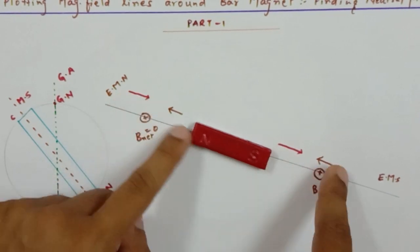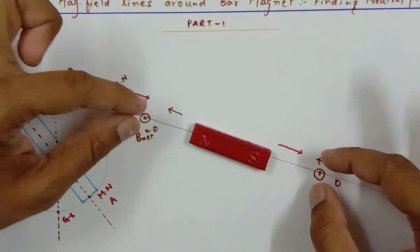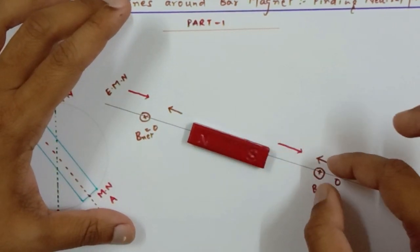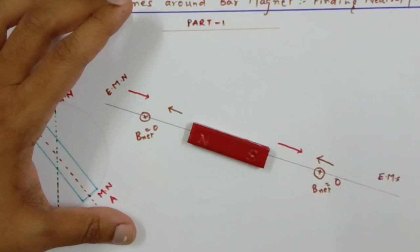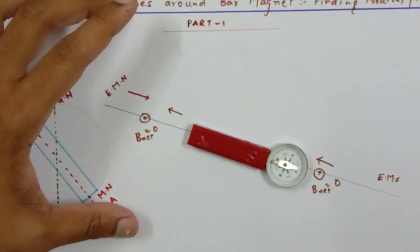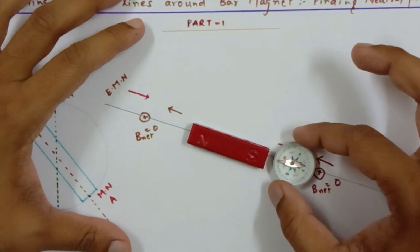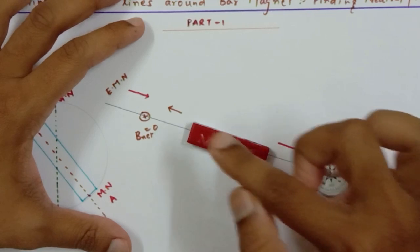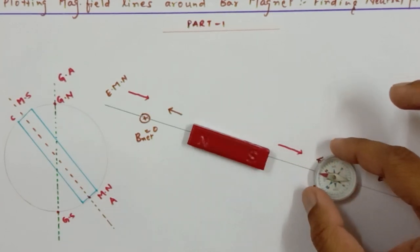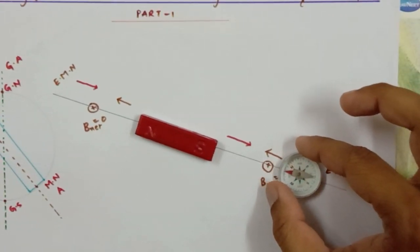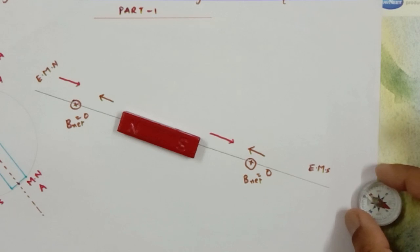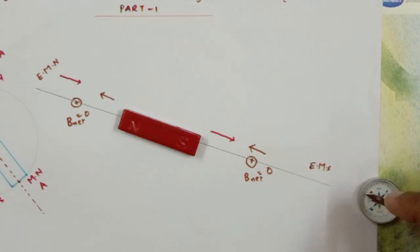There are two neutral points — one on each side — where the magnetic field of the earth and the bar magnet are equal and opposite. To know whether I've reached a neutral point, I take a compass and place it exactly on the axis. Near the magnet it deflects, but as I move it backward, a point comes where it deflects in a resting position — that is the neutral point where both magnetic fields are equal.